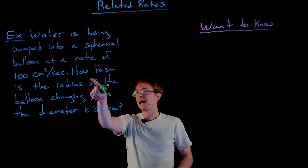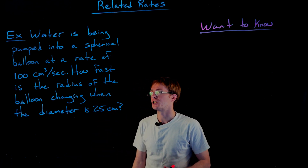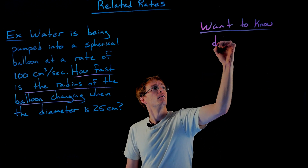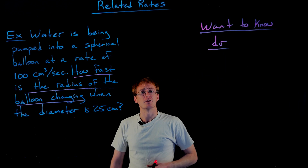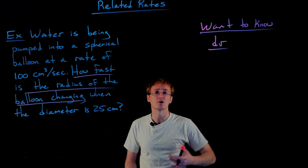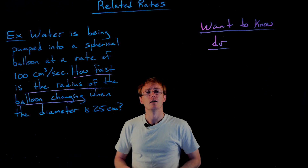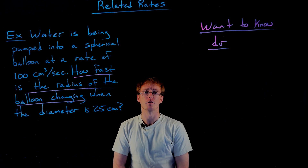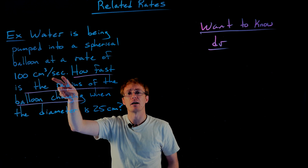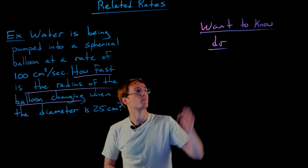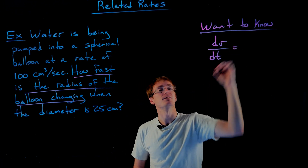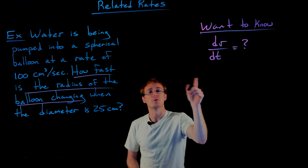That last sentence gives it away — we're asked how fast the radius of the balloon is changing. So we're being asked for the rate of change of the radius, which is the derivative of the radius. We need to know what we're differentiating with respect to. It's usually time, and we can confirm that by looking at the units of the given rate: 100 cubic centimeters per second has seconds in the denominator, so we differentiate with respect to time. What we want to find is dr/dt, the rate of change of the radius with respect to time.